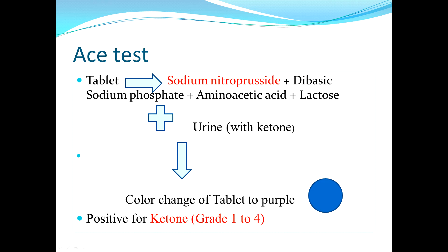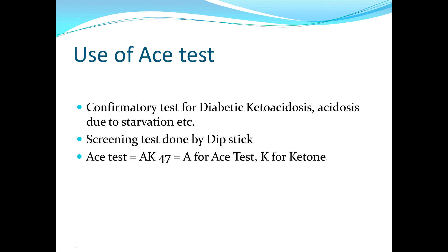Based upon the color change — a light lavender color or a purple color — you grade the reaction from one to four. The S test is used as a confirmatory test for diabetic ketoacidosis, because diabetic patients usually produce ketones in the urine. Ketone is the breakdown product of fatty acid, so we use a dipstick as a screening test and when you get a positive ketone on the dipstick, you do the confirmatory test using the S test.